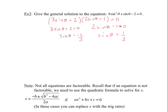Starting with sinθ equals 1 half — this is an exact value you can find on the unit circle, so no calculator needed. The angles where sine equals 1 half: think, 1 half is positive. So θ equals π/6 and θ equals 5π/6. We're asking for the general solution, so those are the answers in the first positive revolution, and I need to add an infinite number of full revolutions: plus 2πk, where k is an element of the integers. Same thing for the second solution: plus 2πk, k is an element of the integers.